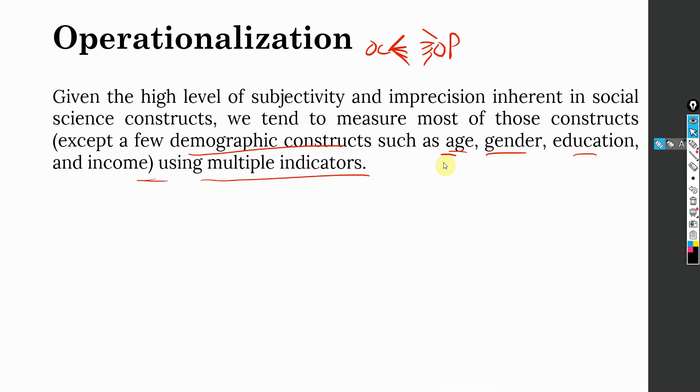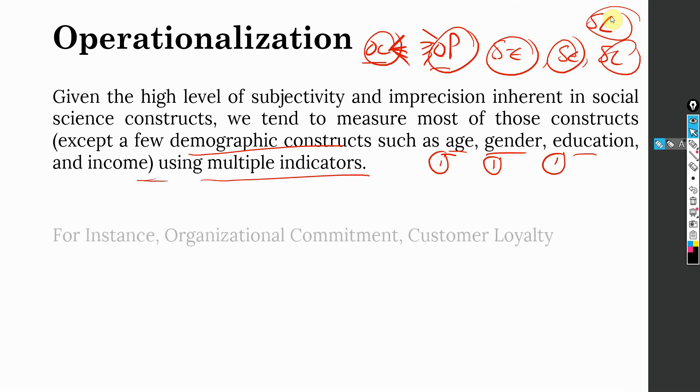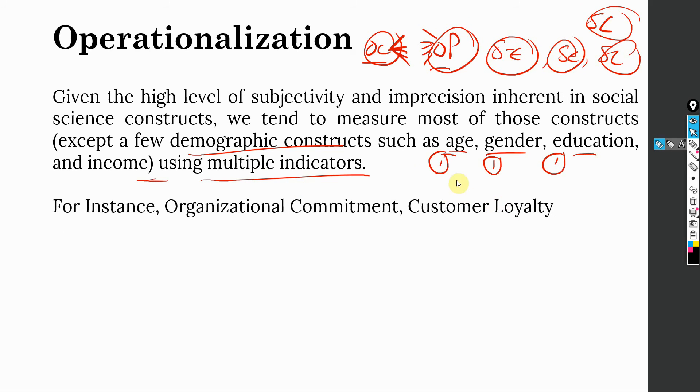For example, if they are asking about age, then obviously there is one question, education, one simple question. A social science construct like organizational commitment and organizational performance or self-esteem or self-efficacy or servant leadership or sustainable leadership, then you've got multiple items to measure these constructs. For instance, organizational commitment and customer loyalty... I'm going to show you an example just now.